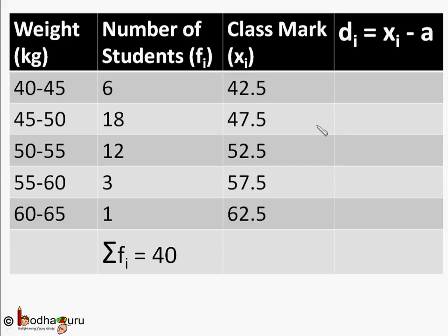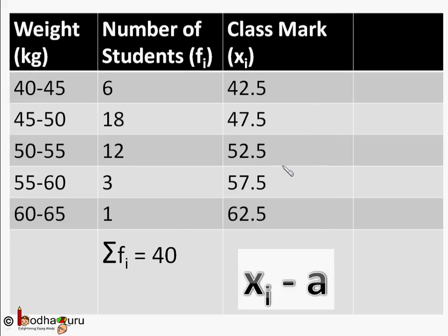Now we introduce a term called assumed mean denoted by A. It is a median of all the class marks. So here the class marks are in sorted order, so the median value of class marks is 52.5 here.